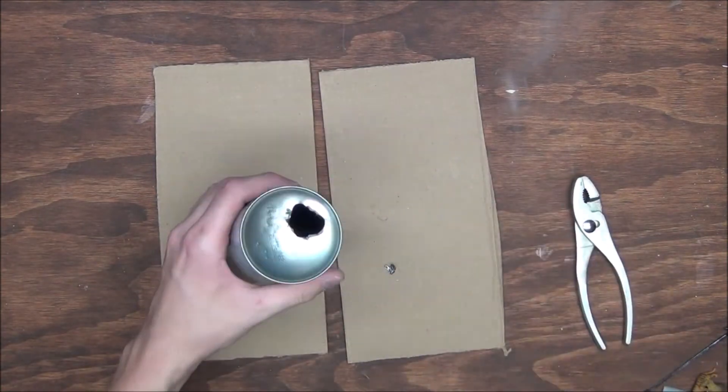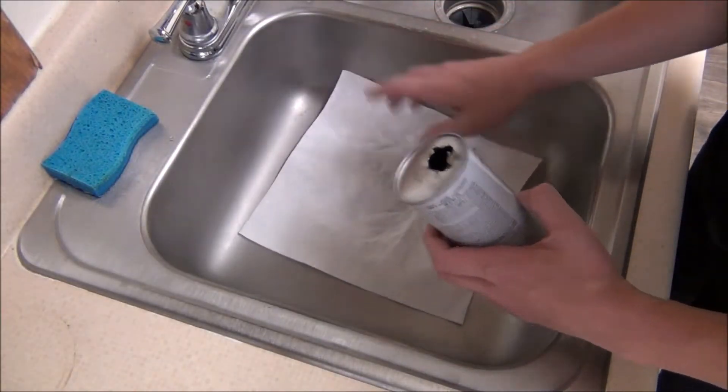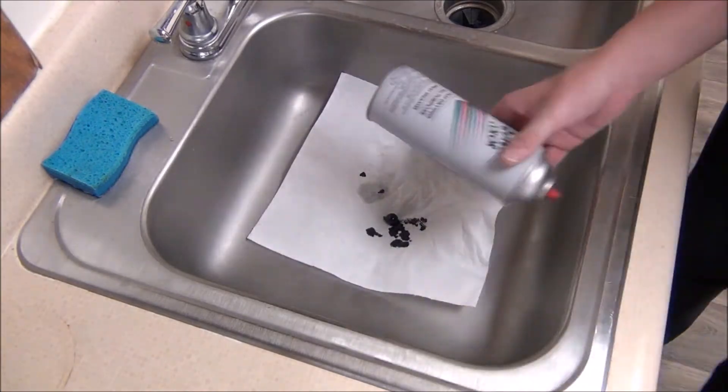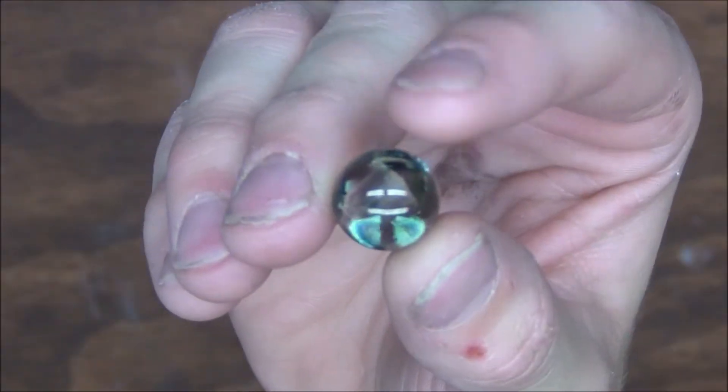Once we've drilled a hole large enough to get the marble out, we'll want to bring this over to the sink because there is wet paint inside. And after a little bit of polishing, we're left with a pretty awesome marble.